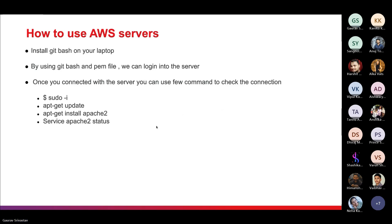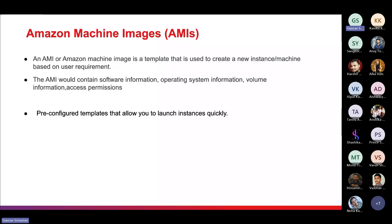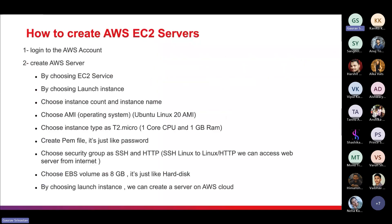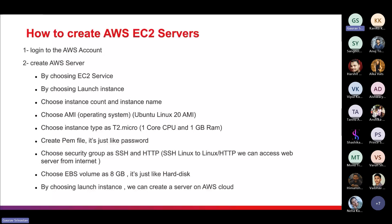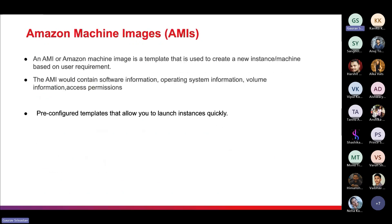Let me know if you have any doubts so far. Now, why do we need AMIs? If you want to create one thousand servers, you don't want to write step-by-step commands each time — that would take too long. AMIs help you create instances in much less time. An AMI, or Amazon Machine Image, is a template used to create new instances based on user requirements.